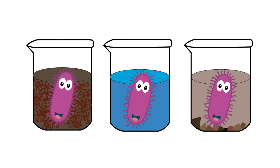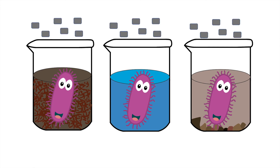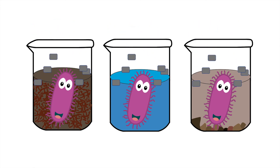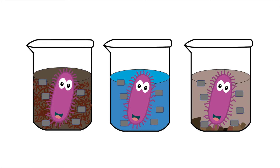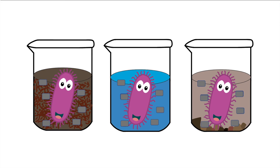So how does this work? First, you take bacterial cells and put them in different environments. Then, you introduce a fake protein building block, which is something they would normally use to live. To them, it seems normal, so they incorporate it into their proteins.